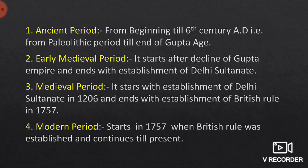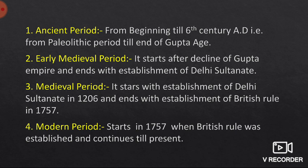To sum up our discussion: Indian history is now divided into four periods — Ancient period, Early Medieval period, Medieval period, and Modern period. The Ancient period ranges from the beginning, that is from the Paleolithic period, till the 6th century AD, that is the end of the Gupta age. The Early Medieval period starts after the decline of the Gupta Empire and ends with the establishment of the Delhi Sultanate in 1206 AD. The Medieval period starts with the establishment of the Delhi Sultanate in 1206 AD and ends with the establishment of British rule in 1757 AD. The Modern period starts in 1757 AD when the British won the Battle of Plassey and established political control in Bengal, and continues till the present. Thank you for watching.